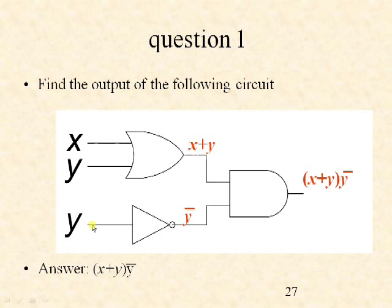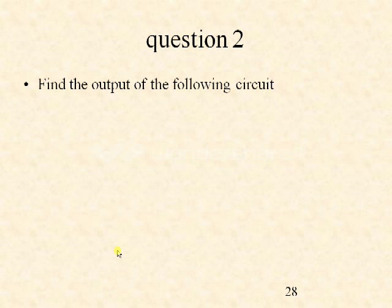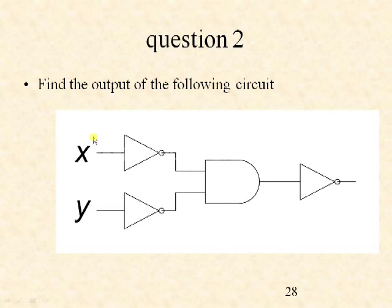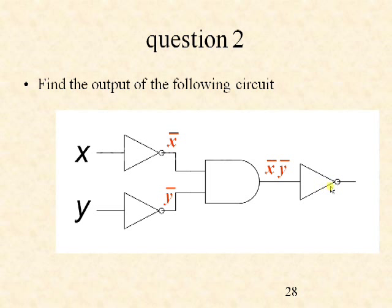Find the output of the following circuit where x and y are two input variables given to two NOT gates. The outputs of the two NOT gates are given as input to an AND gate, and the output of the AND gate is given as input to another NOT gate. The output of the first NOT gate is x bar, the second NOT gate gives y bar, the AND gate gives x bar·y bar, and the final NOT gate gives x bar·y bar whole bar.